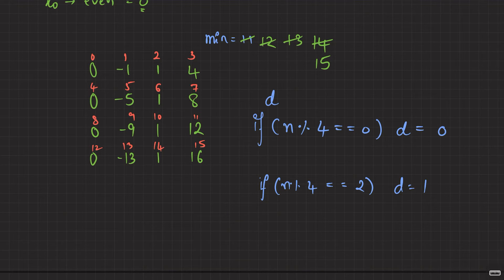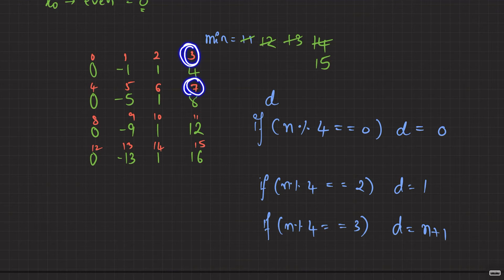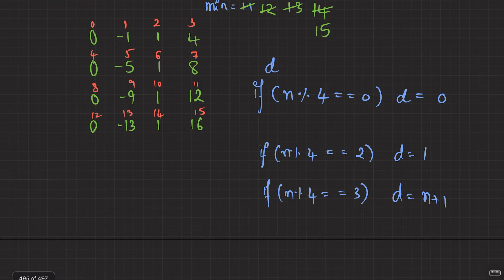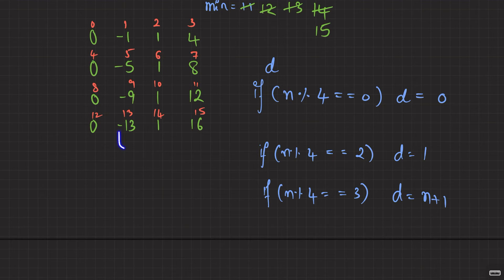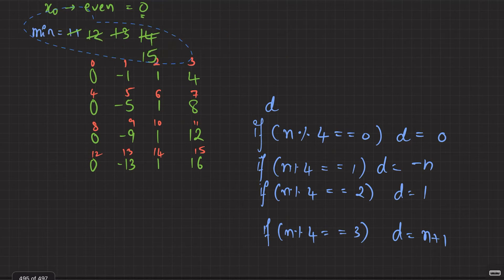Similarly, minutes 3, 7, 11, 15 all leave a remainder of 3 when divided by 4. The positions are 4, 8, 12, 16 — which is simply n plus 1. So when n mod 4 = 3, d = n + 1. And for the last case: minutes 1, 5, 9, 13 leave a remainder of 1 when divided by 4. The positions are −1, −5, −9, −13 — so d = −n when n mod 4 = 1.